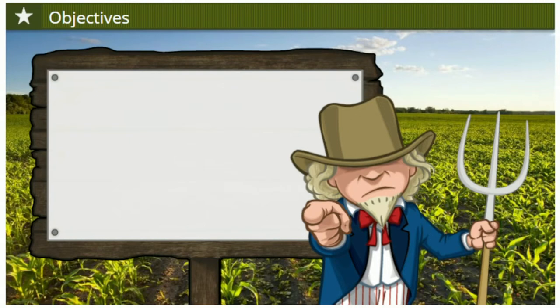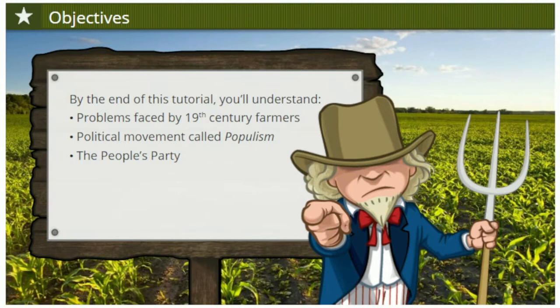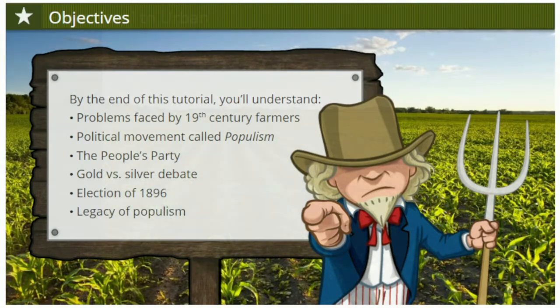It was mostly a movement sparked by farmers and other rural Americans. It can be a tough topic to learn about and make sense of. By the end of this tutorial, you'll understand the very real problems faced by farmers in the late 19th century, how these farmers' frustrations became the basis for populism and the People's Party, the complicated debate about the gold standard versus the silver standard, and the legacy of populism in American history.